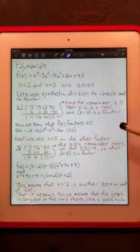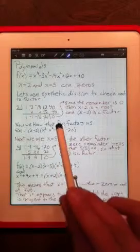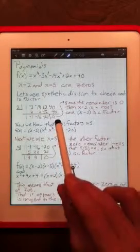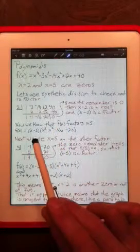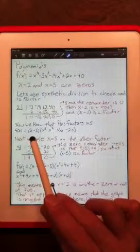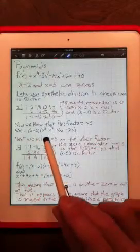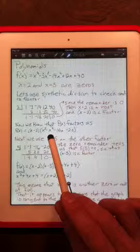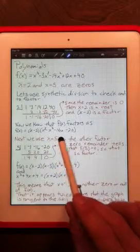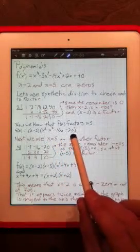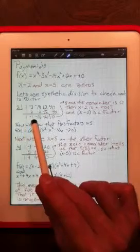So the cool thing about synthetic division is it tells us if the answer is 0, the remainder that is, that we have factors. One factor is x minus 2. The other factor is x cubed minus x squared minus 16x minus 20. Those are the coefficients up here.